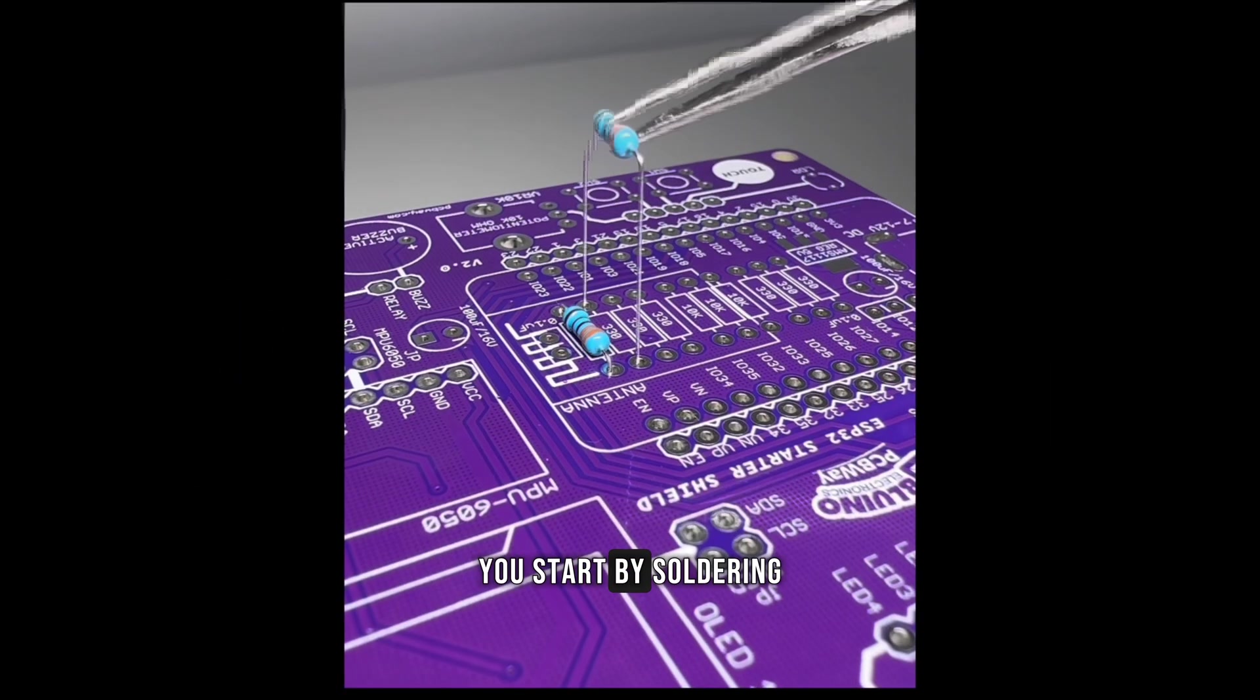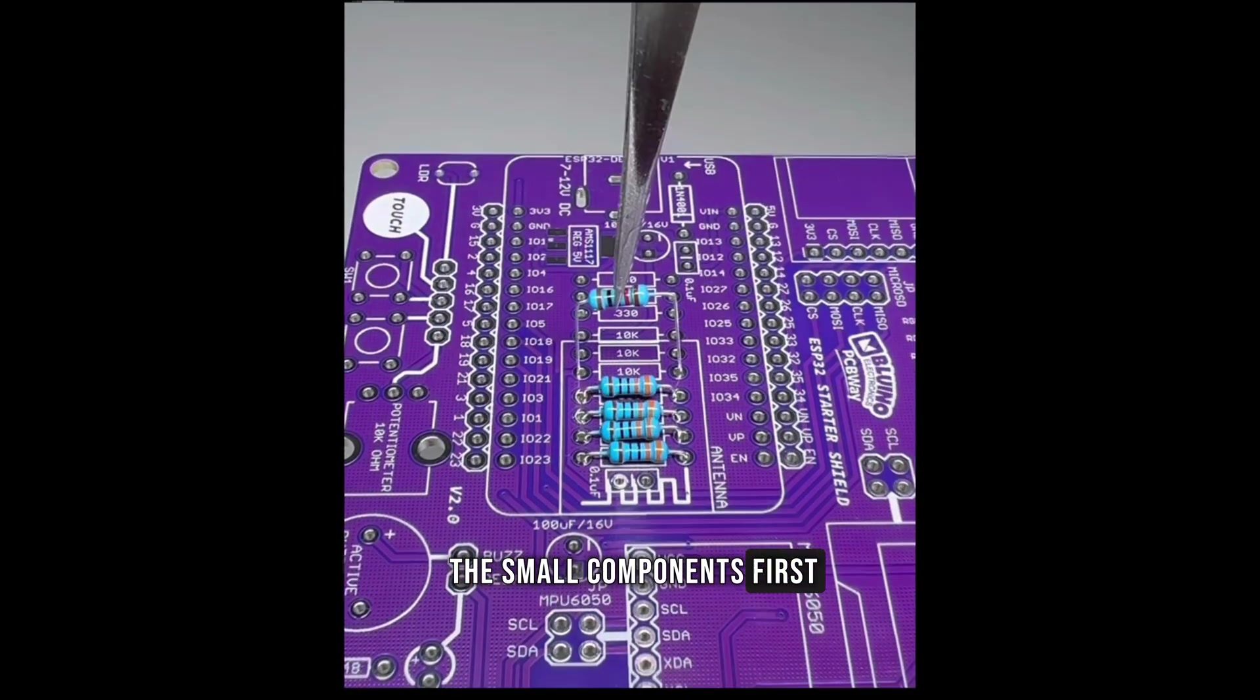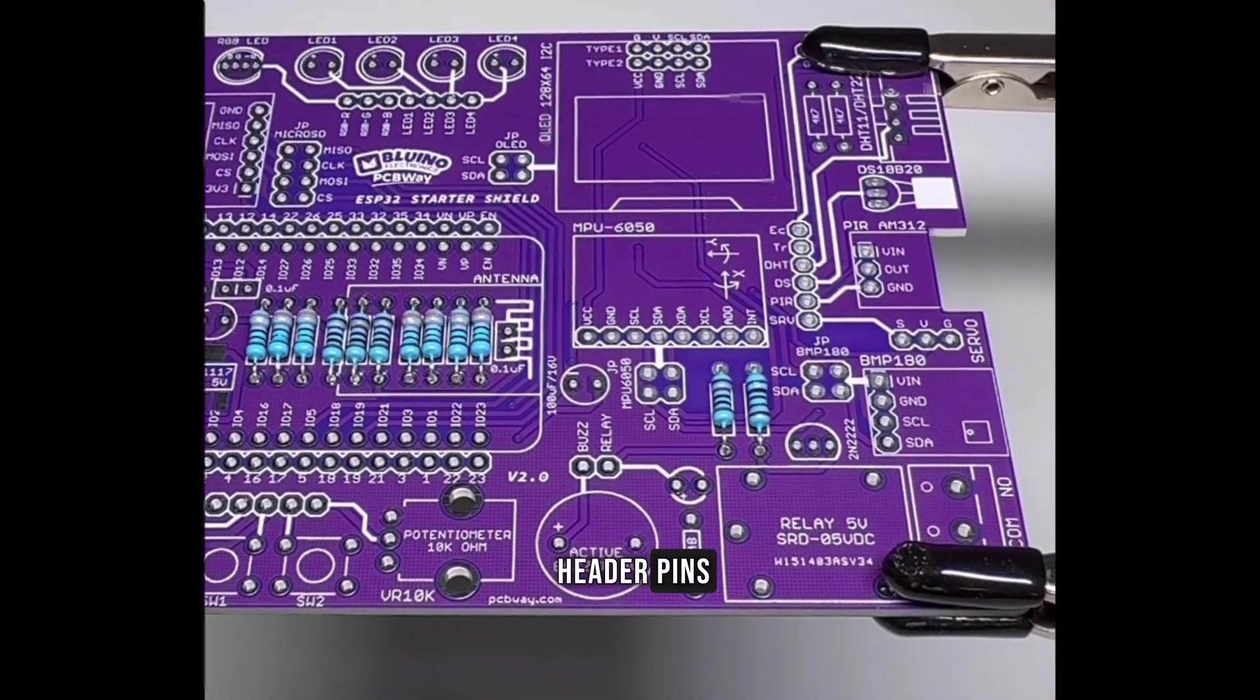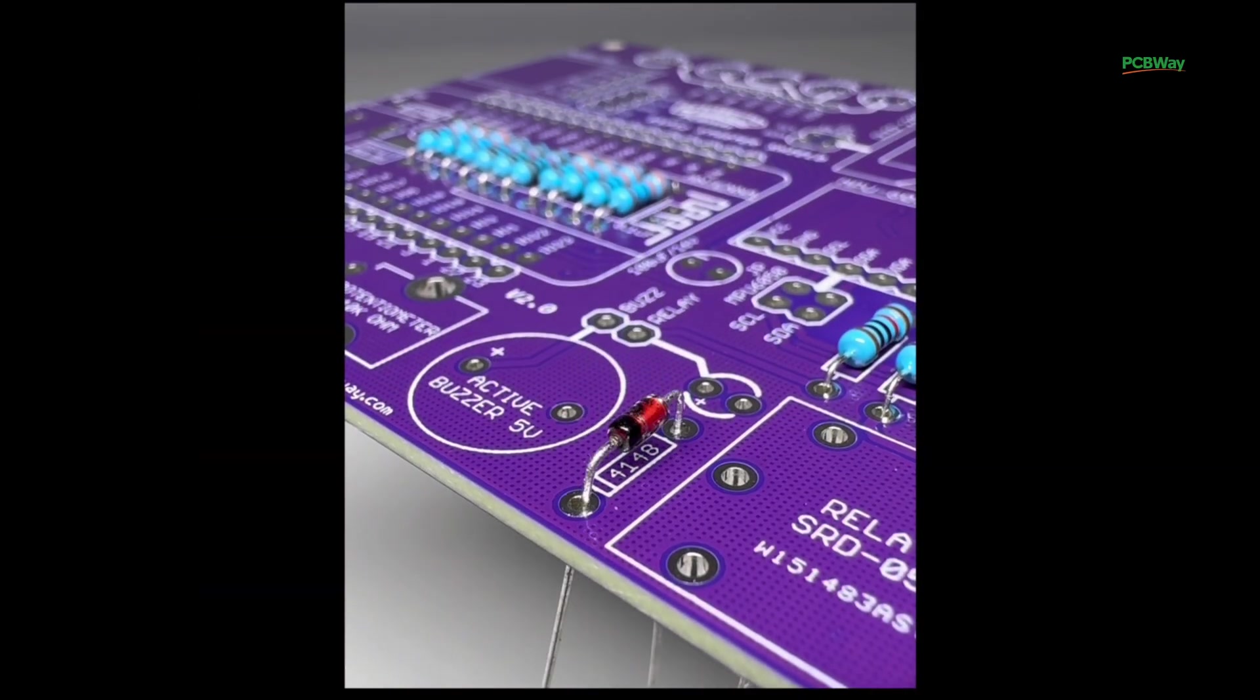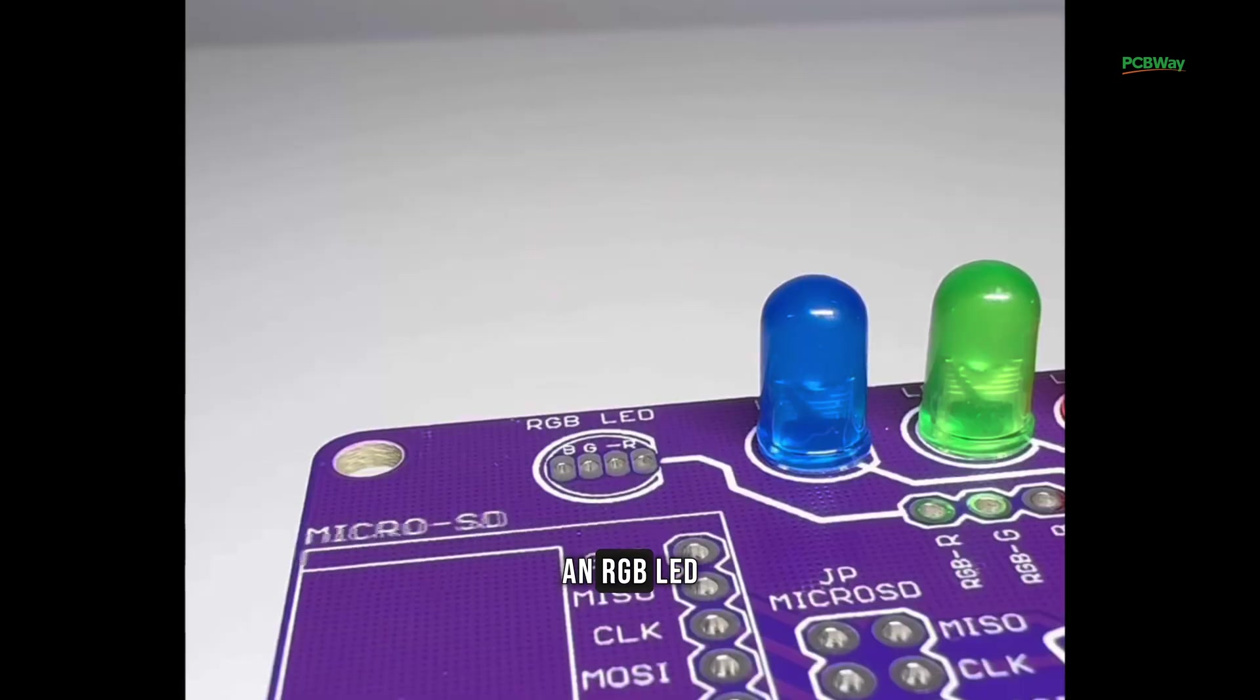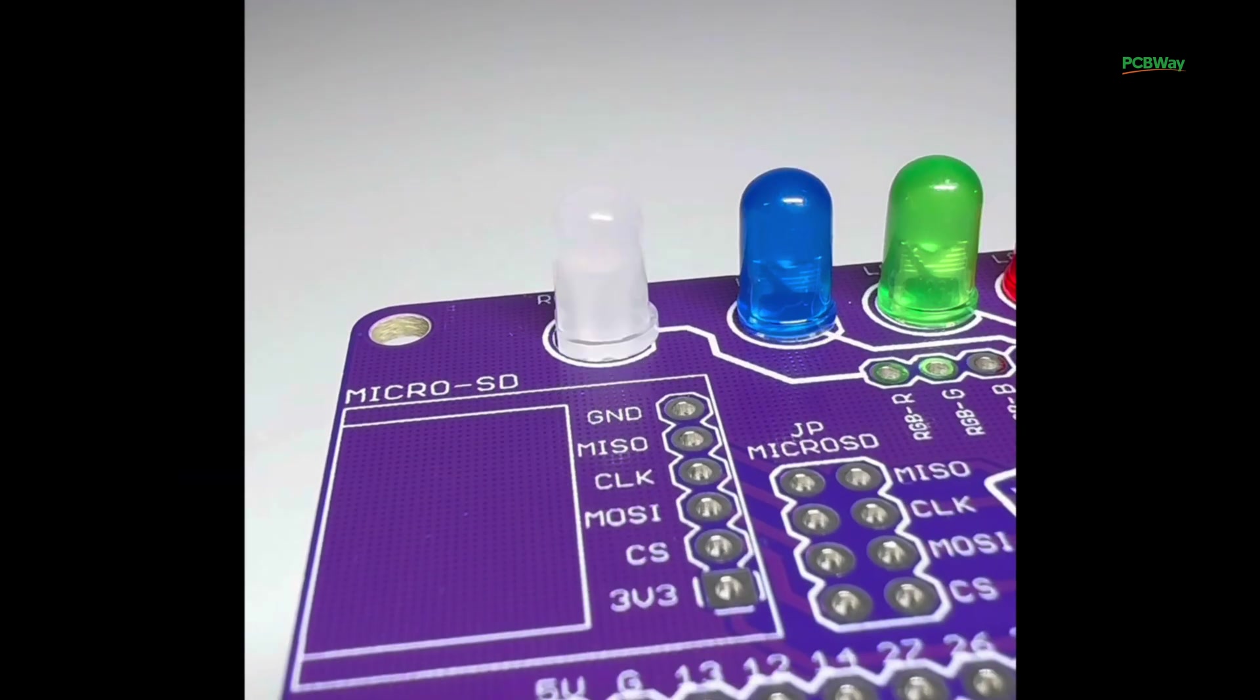To build it, you start by soldering the small components first. That means the resistors, the capacitors, and the header pins. Then four LEDs, an RGB LED, and a relay.